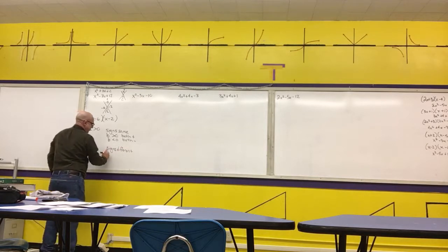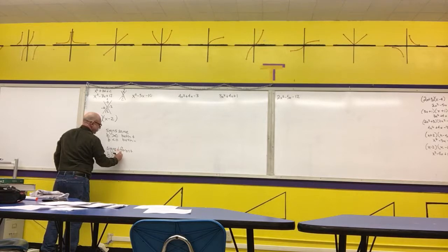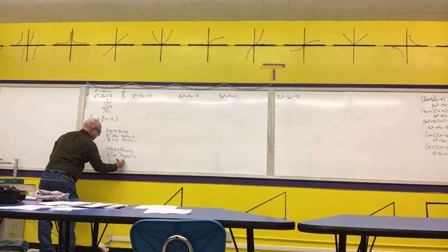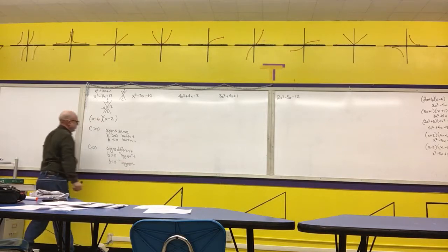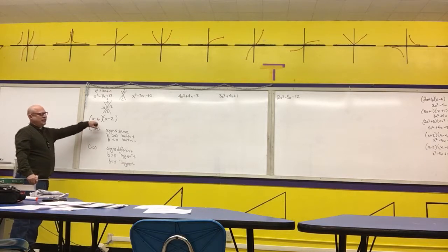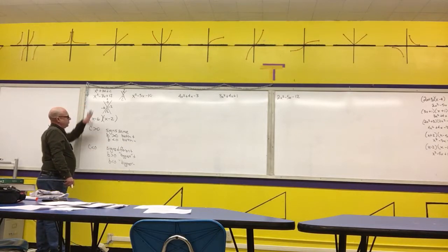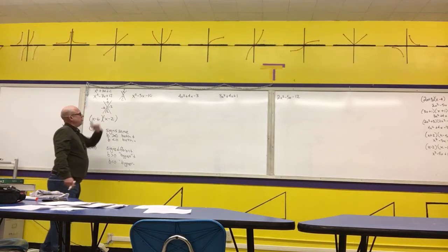In the case where c is negative and the signs are different: if b is greater than 0, the number with the largest absolute value is going to be positive. If b is less than 0, the number with the largest absolute value is going to be negative. So we need to use a little bit of reasoning to think through some of these problems.